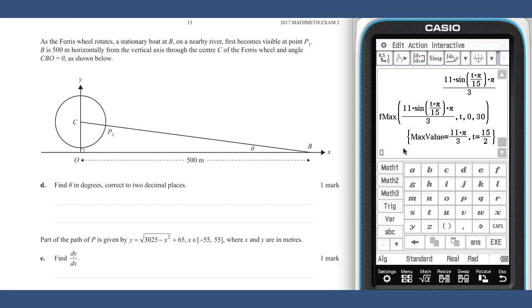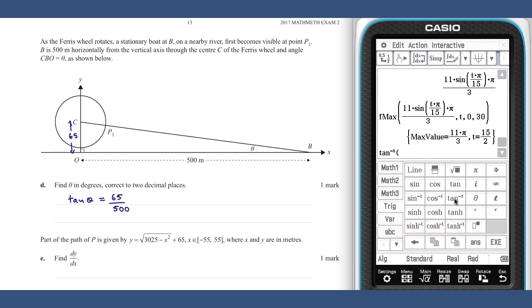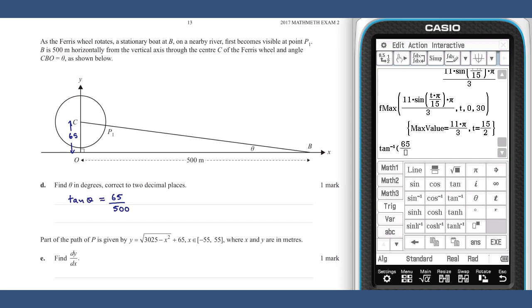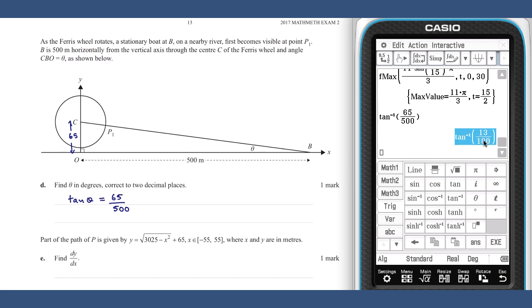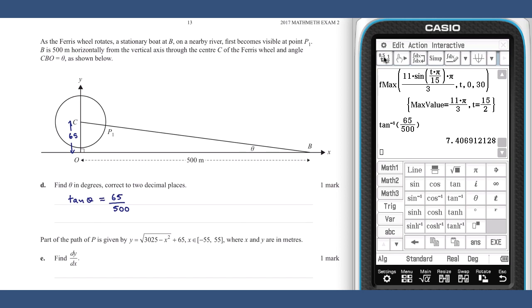Part D. We are now introduced to a boat at point B and an angle theta in the right angle triangle OBC. Given the information about the ferris wheel, we know that the line OC is 65 metres in length, giving us the tan ratio tan theta equals 65 over 500. And we are asked to find the value of theta in degrees to two decimal places. Using the arctangent command, and remembering to turn our class pad from radians to degrees, gives a value to two decimal places of 7.41 degrees.